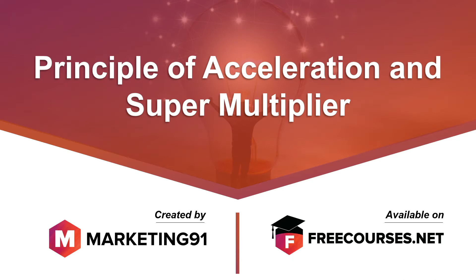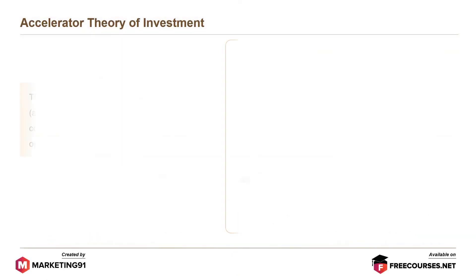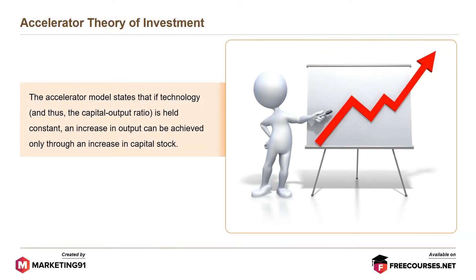Hello and welcome to marketing91.com. The accelerator model states that if technology and thus the capital output ratio is held constant, an increase in output can be achieved only through an increase in capital stock.